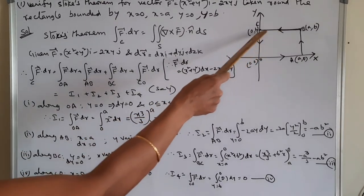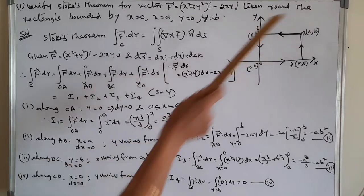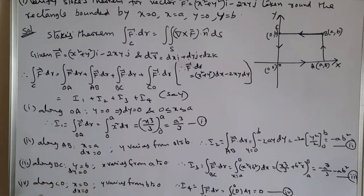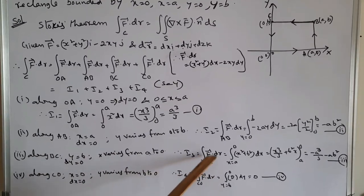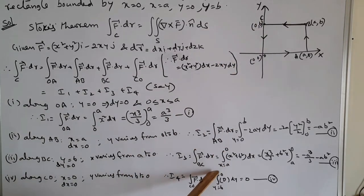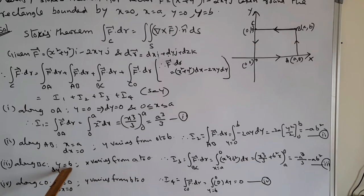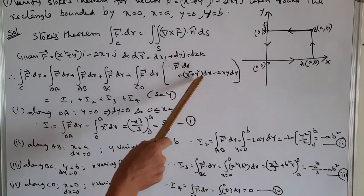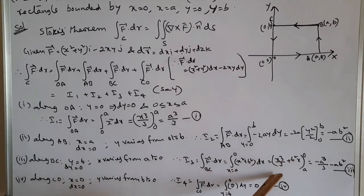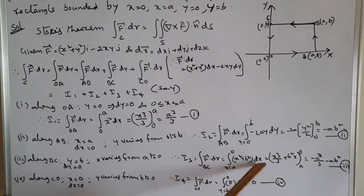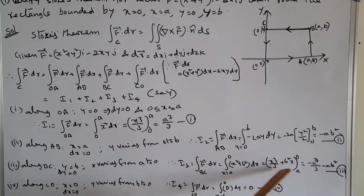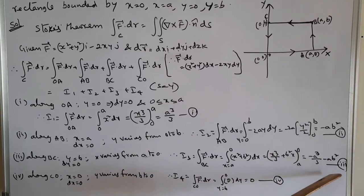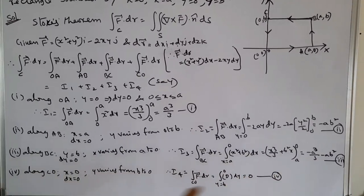Along BC, y = b, so dy = 0, and x varies from a to 0. Therefore I3 = integral of F̄ · dr̄ over BC. Substituting y = b and dy = 0, we get (x² + b²)dx. Integrating: x³/3 + b²x with limits a to 0. Substituting upper limit minus lower limit gives −a³/3 − ab². Consider this as equation (III).